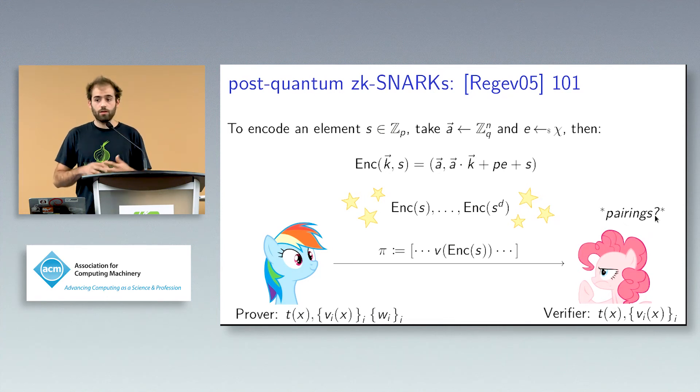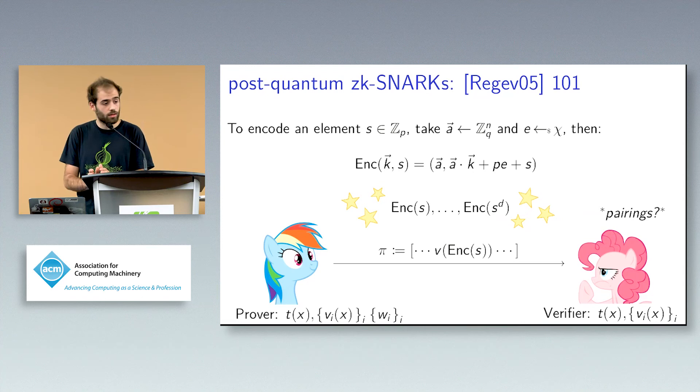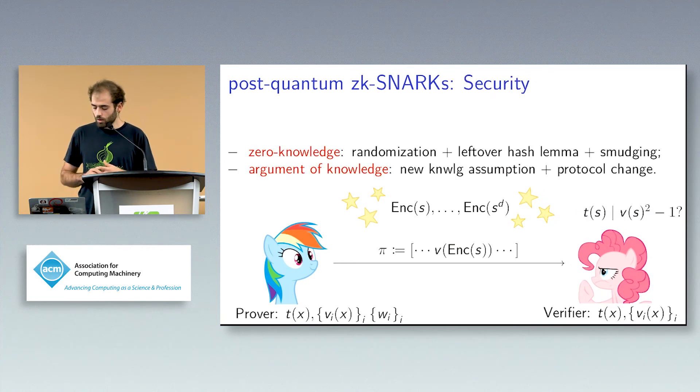But on the other side, you cannot really perform pairings on the side of the verifier. So this is where the verification strings come in because we moved. So there, this is the reason why we moved to the designated verifier case where we basically give the secret key to open these encodings to the verifier. The verifier can therefore test for divisibility and sort of the proof goes in a similar way to the group case.